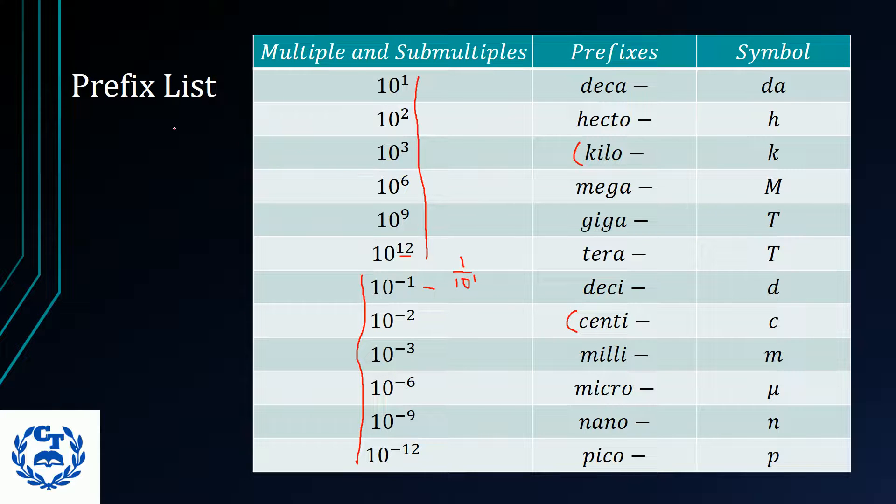Now, when you have something like centimeters, you are simply saying that we have a prefix here of 10 to the power of minus 2, and the unit that we are measuring this is meters. So, we say centi meters.